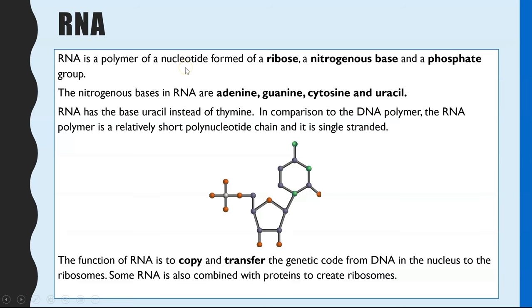RNA is a polymer, so within the biological molecules topic it counts as one of the polymers. The monomer it's made up of is a nucleotide, and this nucleotide contains a ribose sugar, which we can see in the diagram. Ribose is a pentose sugar — the darker circles represent carbons, and we have five carbons, making it a pentose sugar called ribose.